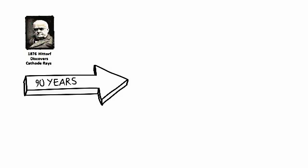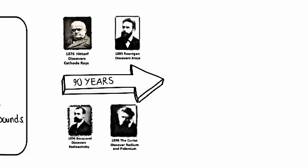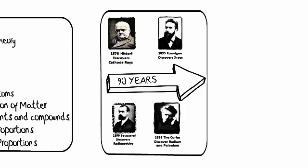In 1876 Hittorf discovered cathode rays. In 1895 Roentgen discovers x-rays which is really the first discovery of radioactivity. In 1896 Becquerel discovers radioactivity of a different sort. And in 1898 the Curies discover radium and polonium which are going to be substances used to probe the internal structure of the atom. So those four key discoveries make what we're about to talk about possible.